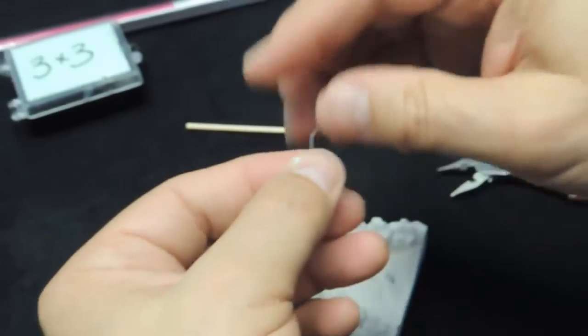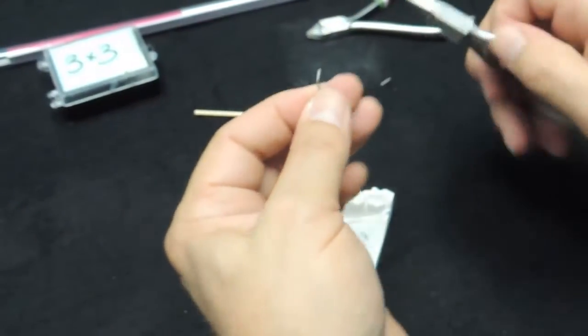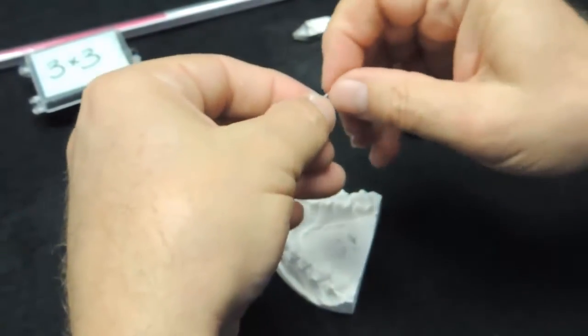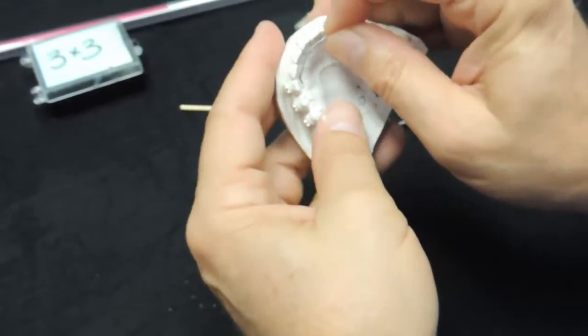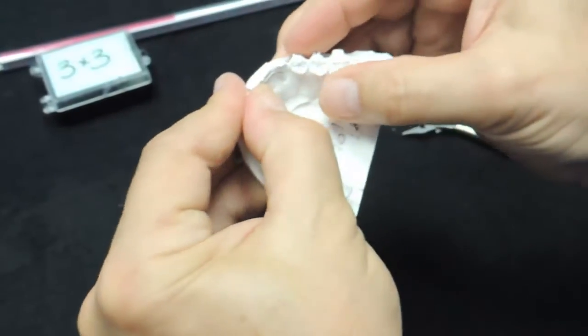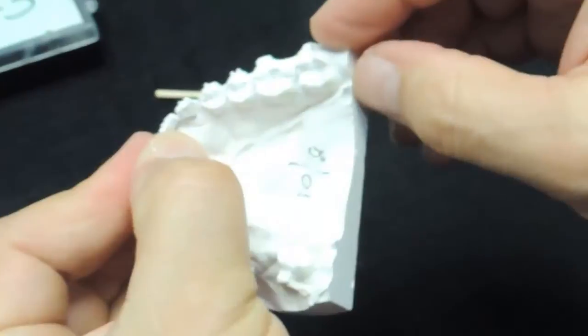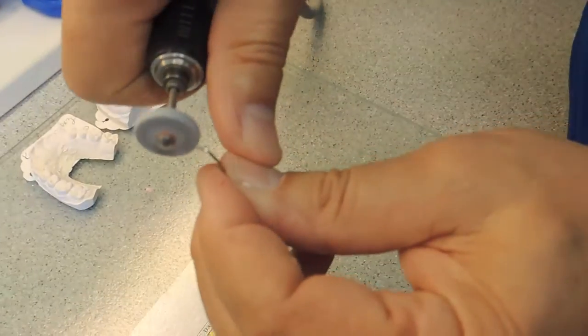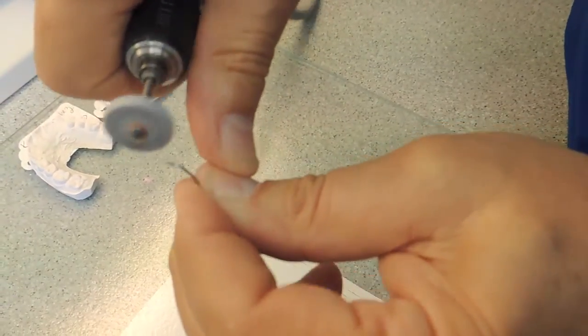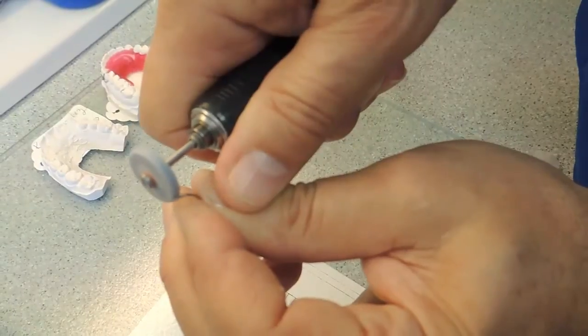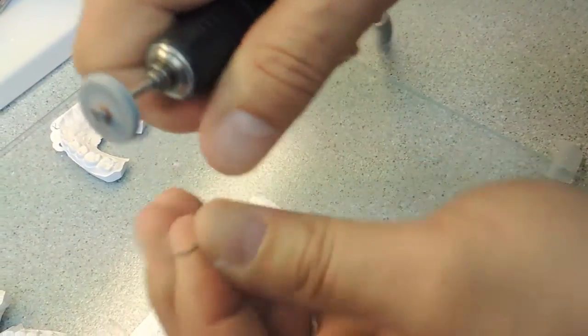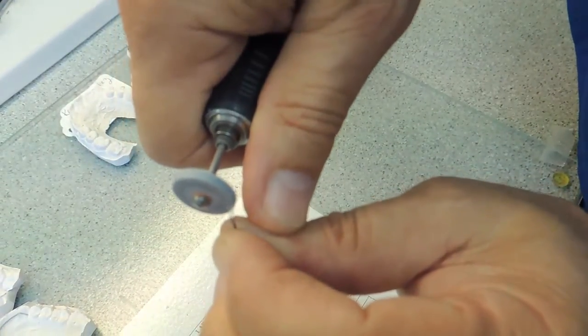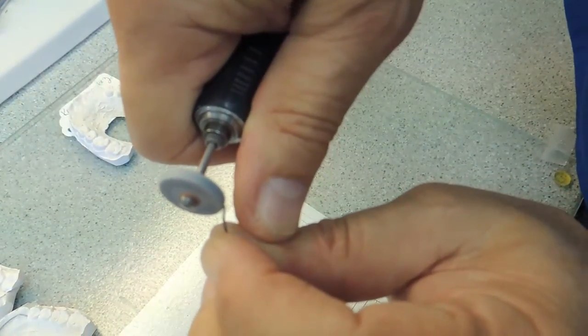The last thing I'll do before we fit it in the model is feather edge the ends of these wires so that the composite doesn't have to be as thick. You want to end up with the end of the wire at about half way onto the cuspid like that. So last thing we do is feather edge the end of the wire with either a diamond bur, green stone, heatless stone, anything you want to do here just to make that thinner so that the composite doesn't have to be as thick.